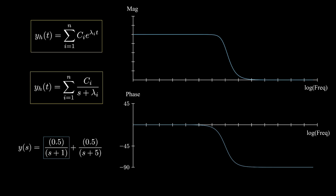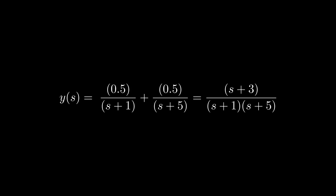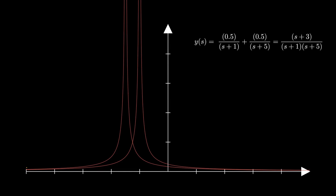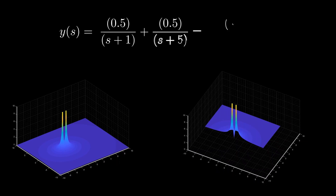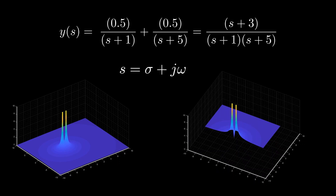The net frequency response is the sum of all individual responses generated by each rational function. The sum of those rational functions is also a rational function, whose numerator depends on the weights of the individual rational functions. The sum of rational functions of one variable is a rational function consisting of peaks and valleys. The roots of the numerator of the resultant function are called zeros — the locations where the function goes to zero. So the Laplace transform of the solution to an LTI differential equation is a rational function of two variables: a 3D surface consisting of poles and zeros.